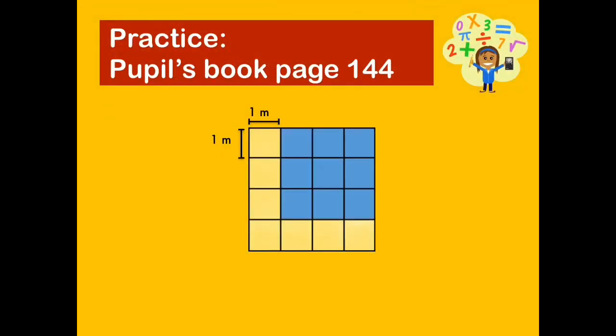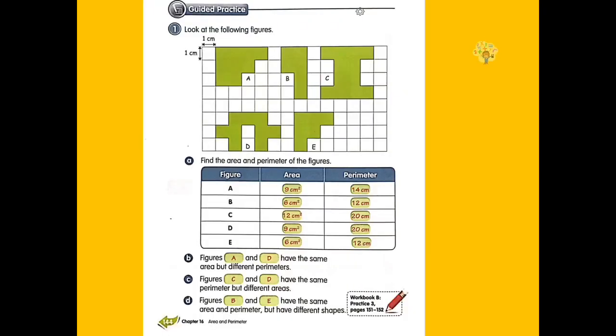Look into your pupil's book, page 144. Pause this video for a while as you try to answer the given items. Remember, to answer the given questions, make sure to complete the given figures by drawing lines for your square units. Once you're done, check if your answers are correct.